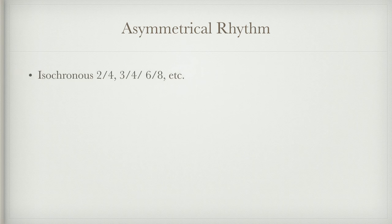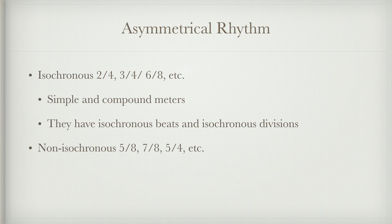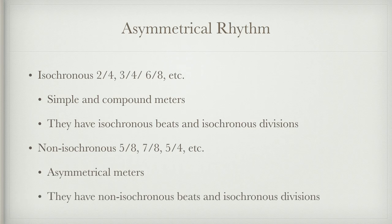Isochronous time signatures — like 2/4, 3/4, and 6/8 — have both isochronous beats and isochronous divisions of the beat. Non-isochronous time signatures are your complex time signatures, also called asymmetrical meters. They have non-isochronous beats but tend to have isochronous divisions, since you can still divide the individual beat into groups of two or three. A 5/8 time signature is non-isochronous but can be divided into groups of three and two, and the eighth note is still divided into two smaller subdivisions.